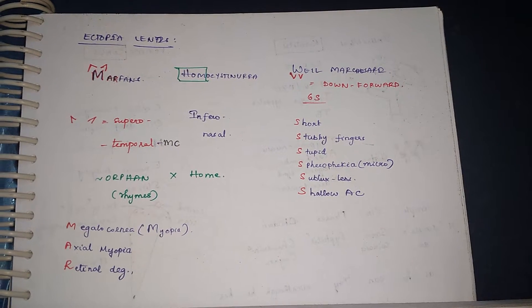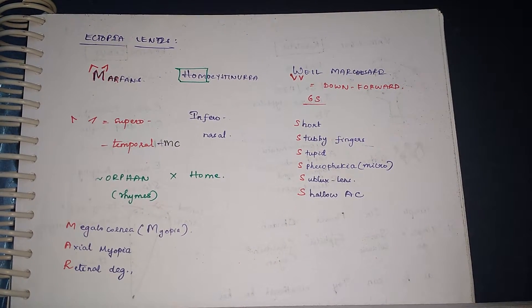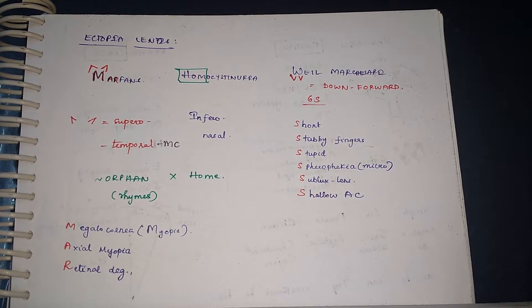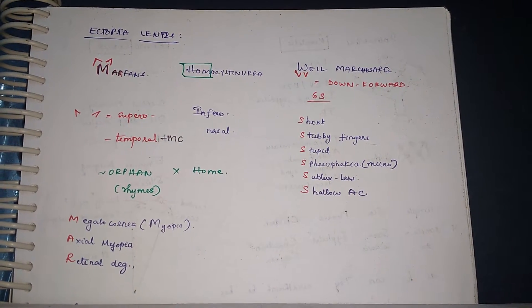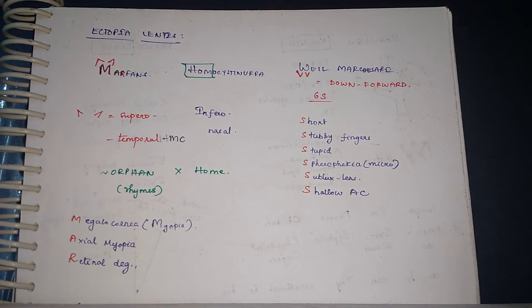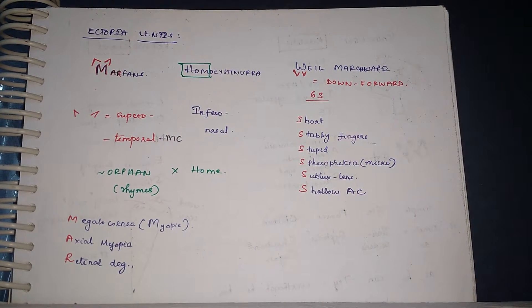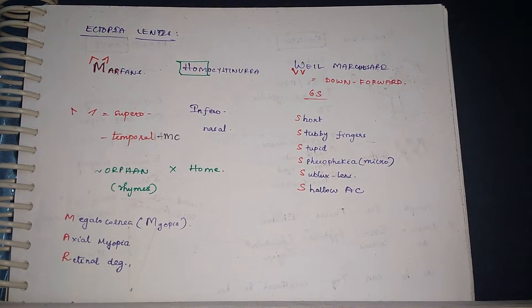And Weill-Marchesani - put caps at the bottom of W, we have downward lens. And the six S: we have downward lens, so everything here is down, that is low. The six S's they are: